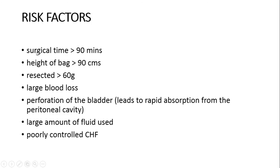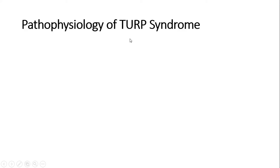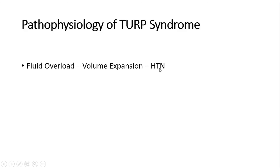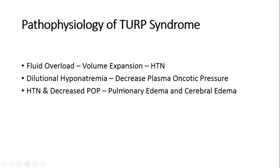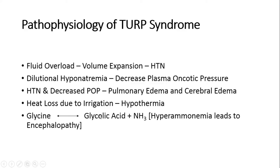Risk factors for TURP syndrome include surgical time, height of the irrigation fluid bag greater than 90 cm, resection of prostate gland greater than 60 g, large amount of blood loss, perforation of the bladder leading to rapid absorption from the peritoneal cavity, large volume of fluid used, and poorly controlled congestive heart failure as a co-morbidity. Regarding pathophysiology: high volume absorption of irrigation fluid causes volume expansion leading to hyponatremia. Fluid overload leads to dilutional hyponatremia and decreased plasma oncotic pressure. This hypotension and decreased oncotic pressure leads to pulmonary edema and cerebral edema. Heat loss due to irrigation is responsible for hypothermia. Glycine can be converted to glycolic acid and ammonia, which is responsible for encephalopathy.